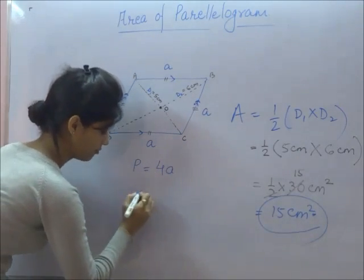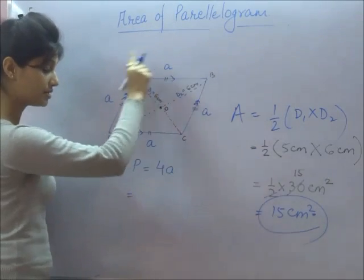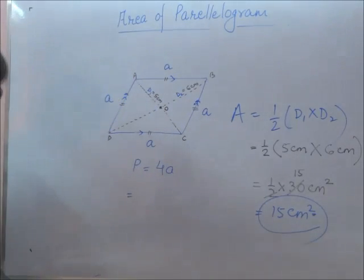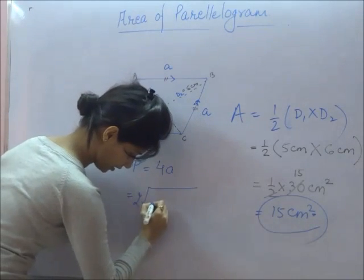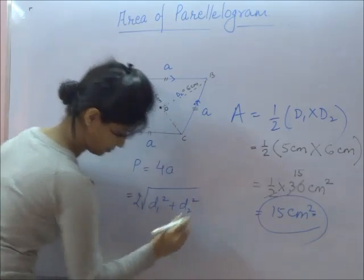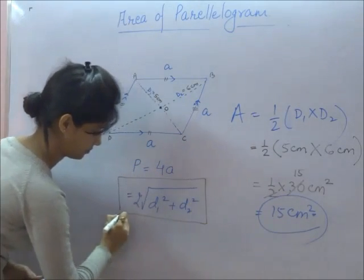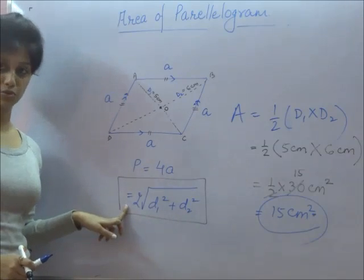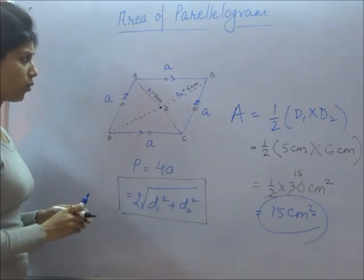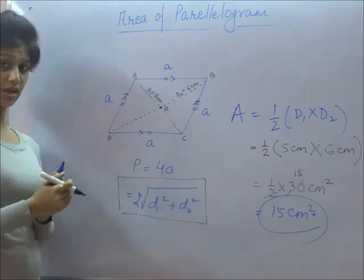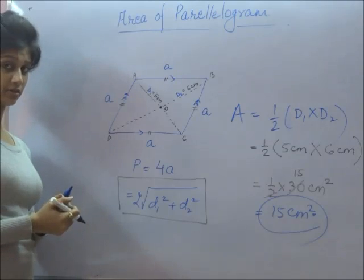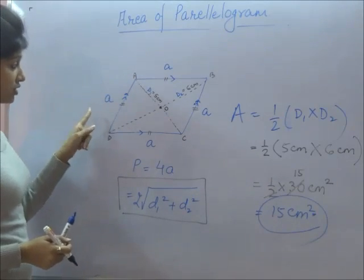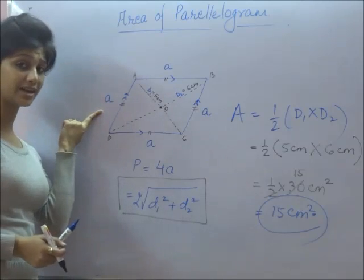Another formula for the perimeter of a rhombus is linked with its diagonals. The formula becomes: 2 multiplied by the square root of diagonal 1 squared plus diagonal 2 squared. In a question, you may not be given the sides, and only the diagonals are given. Some of you might get confused about how to calculate the perimeter without the sides.